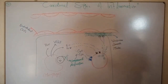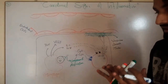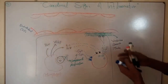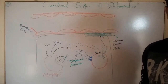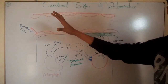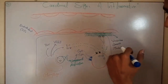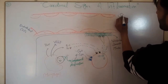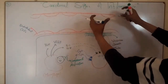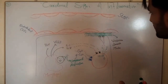Once histamine attaches to its receptors on the smooth muscle, there will be smooth muscle relaxation and as a result, vasodilation. With vasodilation, more and more blood moves toward this region. The blood flow that was coming toward this tissue at high speed will slow down due to vasodilation, causing stasis. As a result of the slow movement of blood, there will be redness on that particular tissue — the first cardinal sign of inflammation.